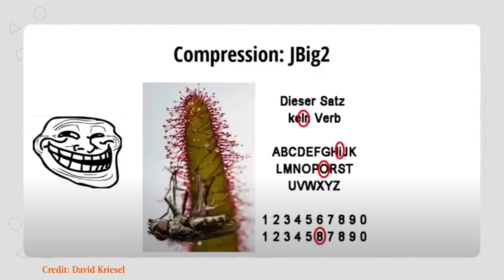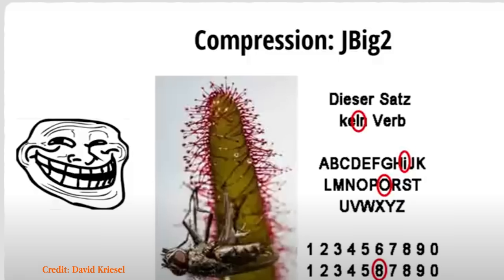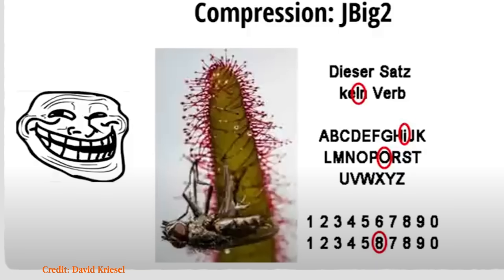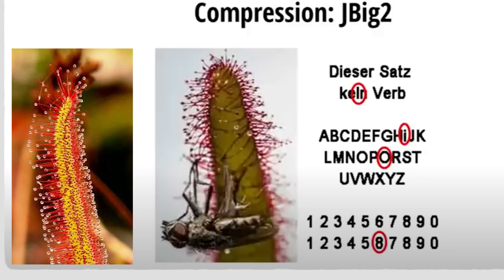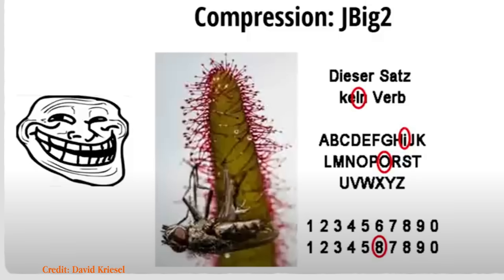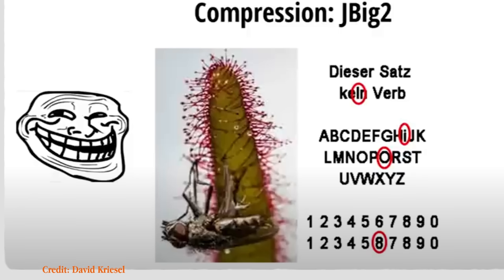So as you can see, the scanner ended up confusing the L and the I and got them mixed up. It also treated O and Q as the same symbol — so now in the alphabet we have two O's and no Q. And a number six has been turned into a number eight. But notice how the organic image was completely unaffected — the image of the fly stuck to the plant, a Drosera, a type of carnivorous sticky plant. The image is completely unaffected because the shape is so complex and organic that the algorithm treated that entire thing as one symbol. The organic shape was completely unaffected. It was only the text-based stuff that was affected. Remember that, because I'll loop back to it in a second.